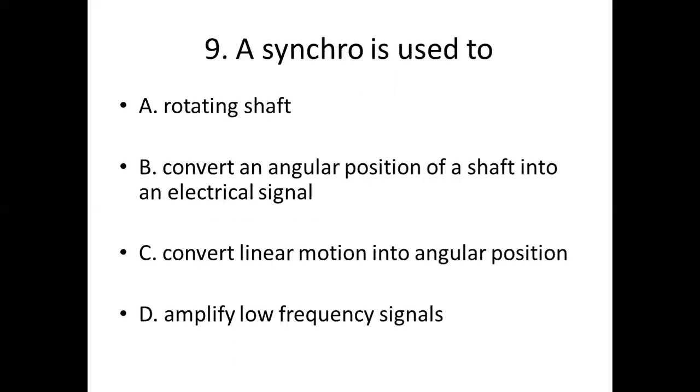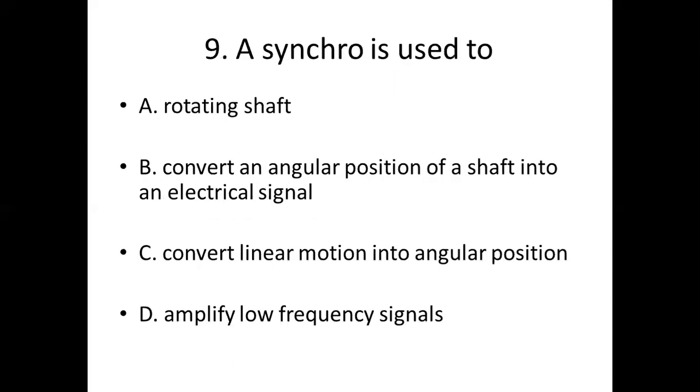Ninth bit. A synchro is used to: Option A, rotating shaft; Option B, convert an angular position of a shaft into an electrical signal; Option C, convert linear motion into angular position; Option D, amplify low frequency signals. Answer is B, convert an angular position of a shaft into an electrical signal.